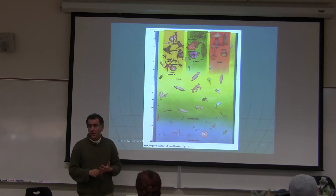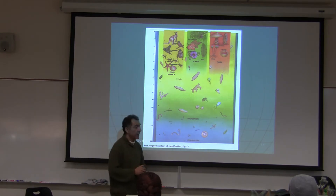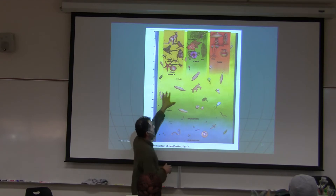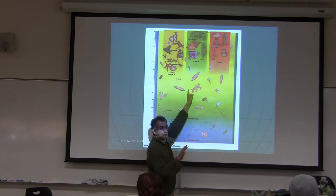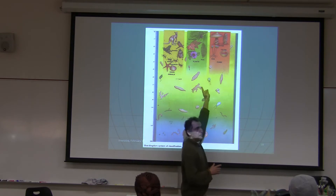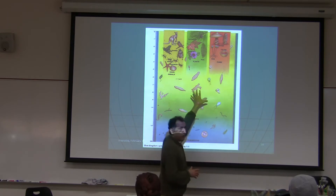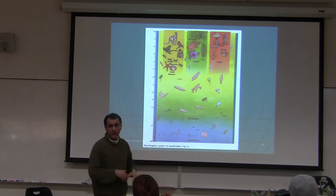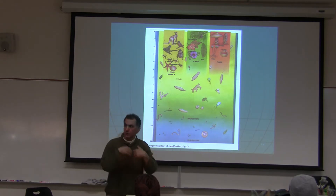The five kingdoms are: Kingdom Monera, Kingdom Protista, Kingdom Animalia, Fungi, and Plant. These three kingdoms — Animalia, Plant, and Fungi — evolved separately from Protista. They did not evolve from one to the next; they each evolved independently from Protista.